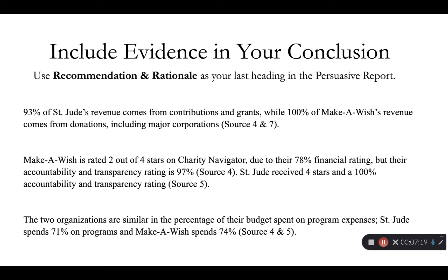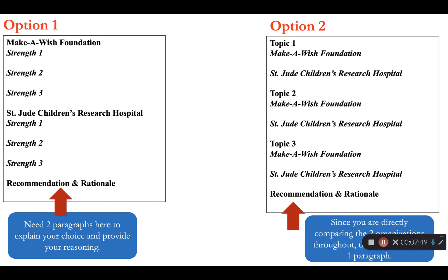Your recommendation and rationale section is the conclusion for your report. State the organization your reader should select and use evidence to explain your recommendation. Cite sources in the conclusion following the citation guidelines. It is okay to use evidence here that you have already mentioned in the report. These examples show how evidence is used to directly compare the two organizations and support the writer's recommendation. If you use option one to organize, you will need at least two paragraphs of information to support your choice. In option two, you have provided a direct comparison throughout the report, so this section can be one paragraph.